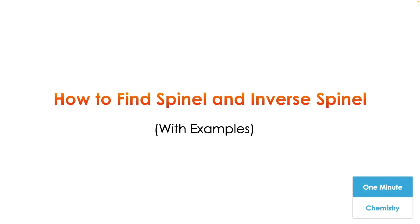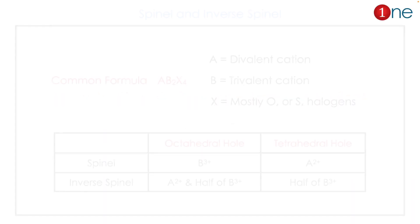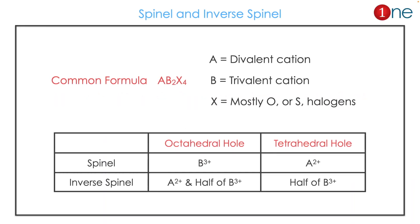Welcome to One Minute Chemistry series. We are going to quickly see how we can find spinel and inverse spinel. What is spinel and inverse spinel? They have a common formula AB₂X₄, where A is a divalent cation, B is a trivalent cation, and X will be mostly oxygen and sulfur, sometimes halogens.